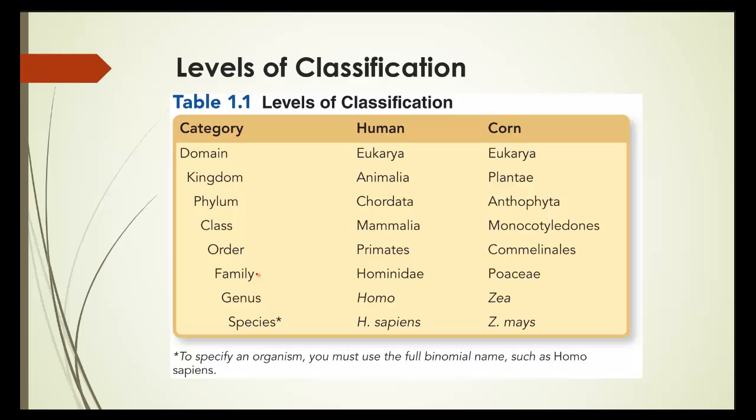So here, for humans, it can be broken down into those different categories. Species being the most specific, and then genus, then family, and order, and so on and so forth.